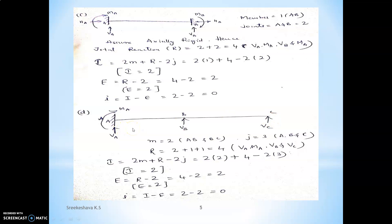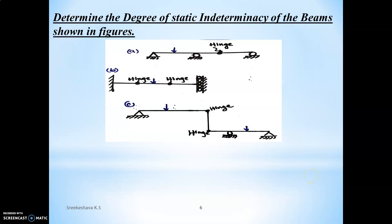Fourth problem: continuous beam, assuming axially rigid — ignoring Ha. Reactions are: Va and Ma at A (two reactions), Vb one reaction, Vc one reaction — total four reactions. There are two members AB and BC, and three joints A, B, and C. Substituting in the final equation gives total indeterminacy = 2 and external indeterminacy r - 2 = 2. The given continuous beam is externally indeterminate of order 2 and internally determinate.